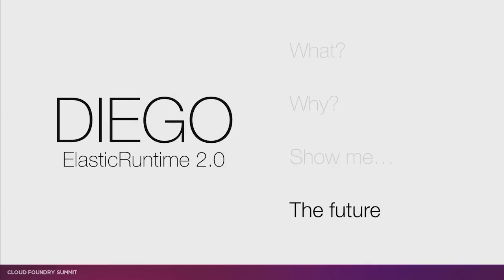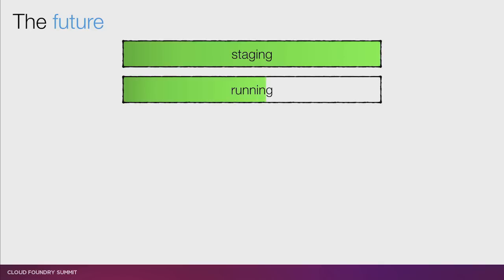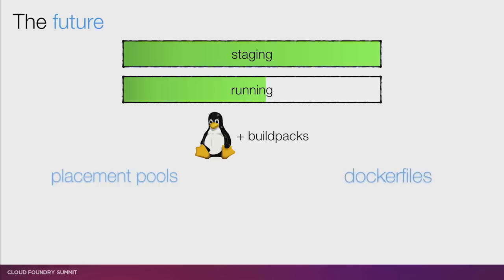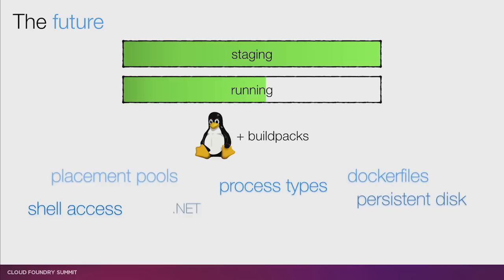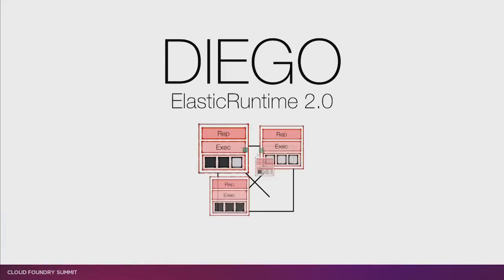Let me quickly show you the future. Staging is done. We're halfway through making Diego run long-running processes. We have support for Linux with Heroku-style build packs, but you can build different staging approaches as well. And here's a long list of features coming: placement pools, Docker file support, process types, persistent disk, shell access, auto-rebalancing, no-downtime deploys, custom health checks. I'm an engineer making promises, so take everything with a grain of salt — but that's the roadmap. And that's Diego.